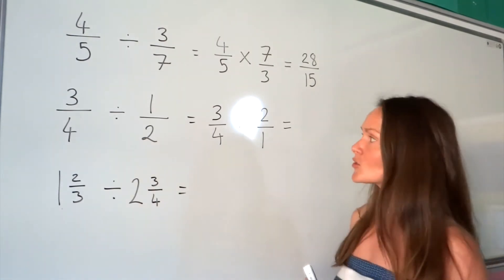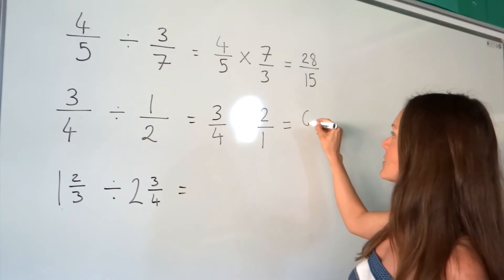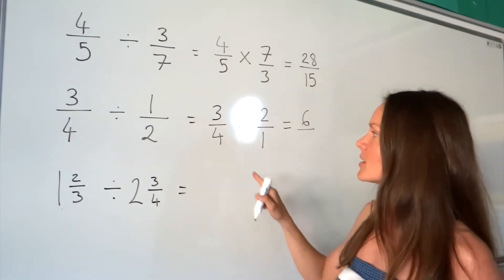Now we're multiplying again. So multiply the numerators, 3 multiplied by 2 is 6. And then multiply the denominators, so 4 multiplied by 1 is 4.